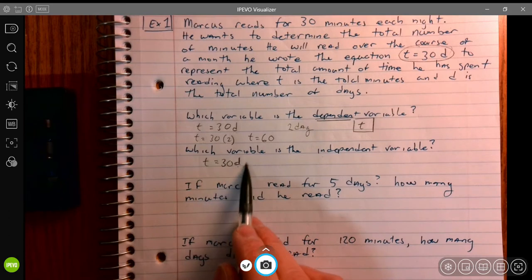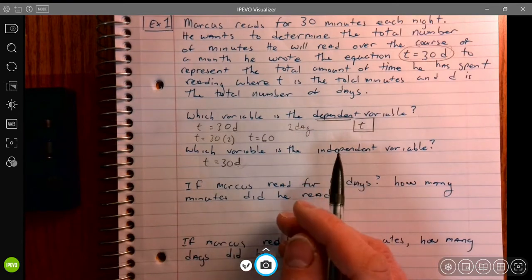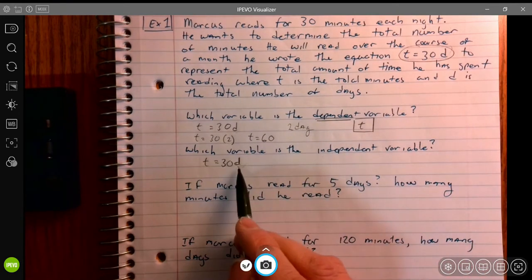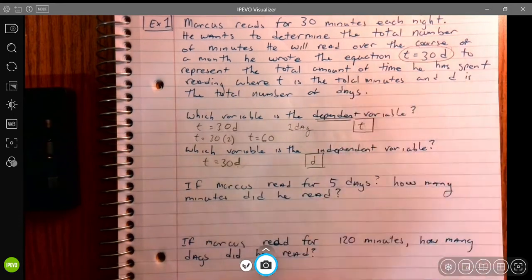It's the amount of days, the number of days that Marcus has been reading, and that can be any number that we want. 365. I don't care. It's independent. What's our independent variable? Our independent variable is d.